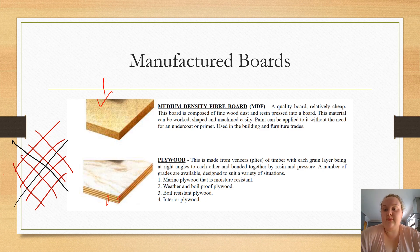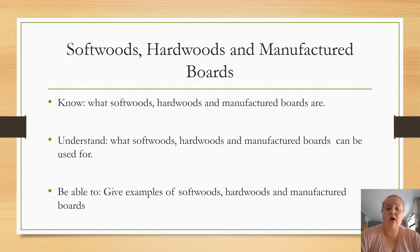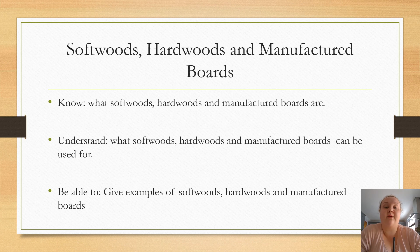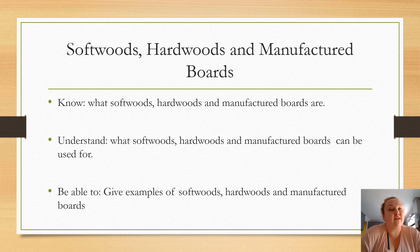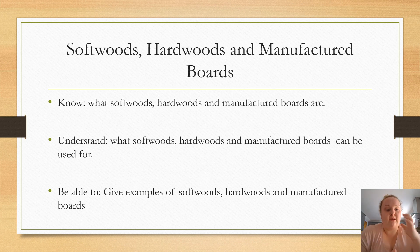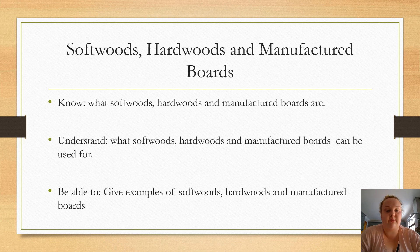Our lesson steps were to know what softwoods, hardwoods, and manufactured boards are — hopefully you all know that now. You need to understand what they can be used for: softwoods for different types of furniture; hardwoods for outdoor purposes, railway sleepers, outdoor benches, or a table inside; and manufactured boards most prominently for kitchens. You should also be able to give examples of each type.